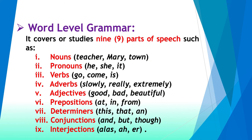Word level grammar covers or studies nine parts of speech. When we say word level grammar it means studying grammar at the level of words — discussing grammatical items at the level of parts of speech. The nine parts of speech include: nouns (e.g., teacher, Mary, town), pronouns (e.g., he, she, it), verbs (e.g., go, come, is).